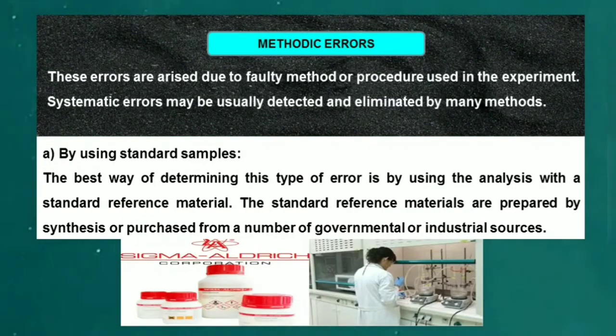Methodic errors: These errors arise due to faulty method or procedure used in the experiment. Systematic errors may be usually detected and eliminated by many methods. The first one is by using standard samples. The best way of determining this type of error is by using the analysis with a standard reference material. They are prepared by synthesis or purchased from a number of governmental or industrial sources.